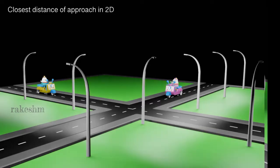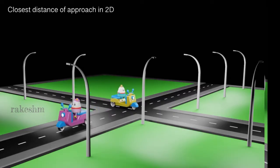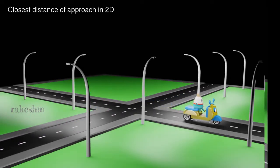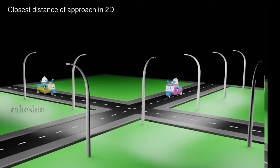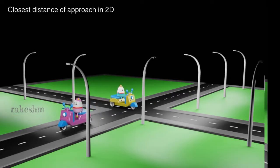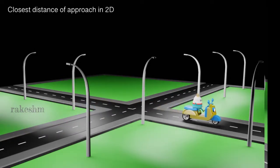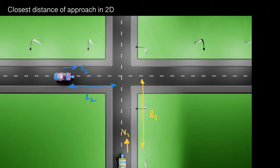Now let us have a look at the front view for better understanding. It is given that the first person is going with speed v1 and his initial distance from the intersection point is l1. The second person is going with speed v2 and his distance from the intersection point is l2.